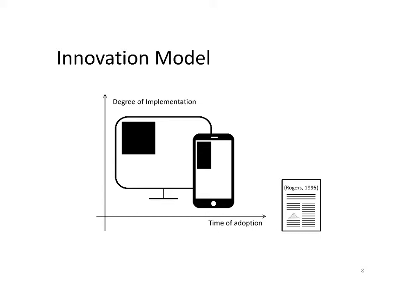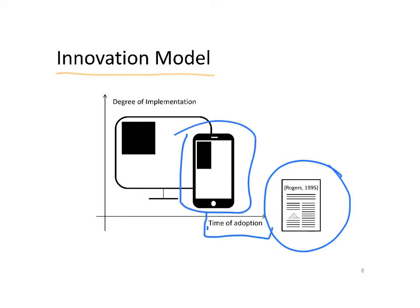The innovation model defined for this research uses the innovation model developed by Rogers back in 1995, which only takes into account one innovation and the time of adoption. This innovation model, taking into account some critics to Rogers' theory, has implemented two changes. One is to include the degree of implementation of each innovation and to analyze two innovations.